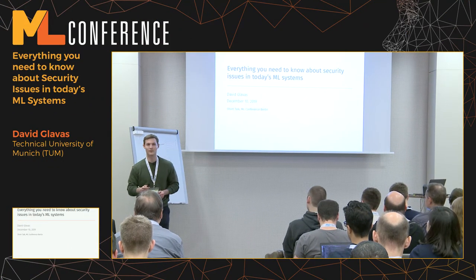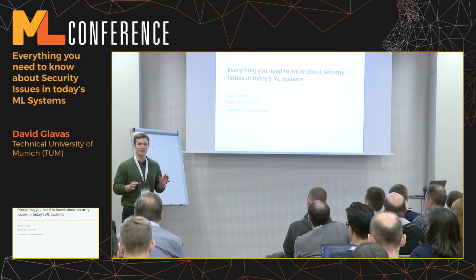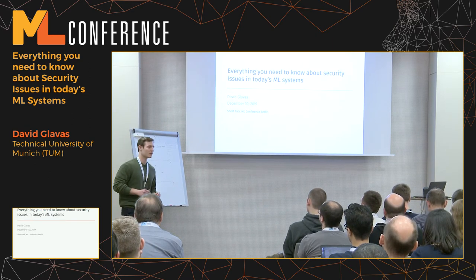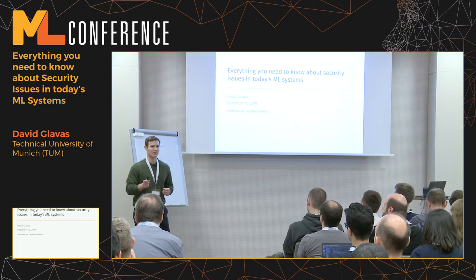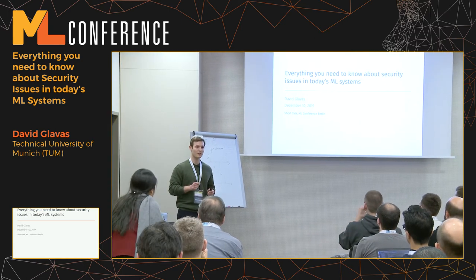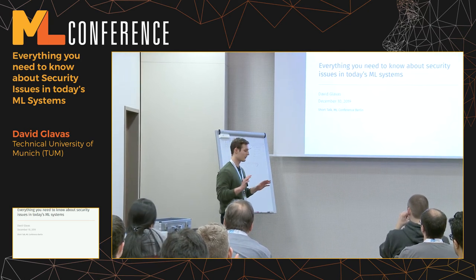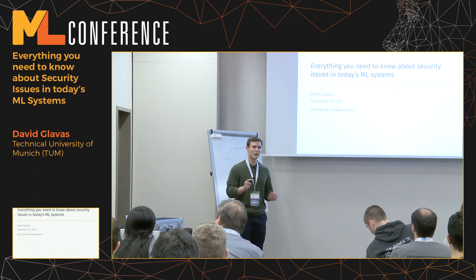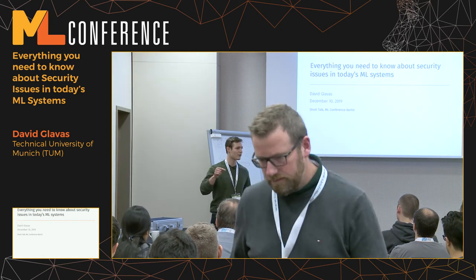My name is David. I studied computer science at the Technical University of Munich, where I collaborated with the IT security chair on topics related to IT security and machine learning. I then worked on a data project at Fraunhofer ISAC in their cognitive security department, which focuses on the intersection of machine learning and computer security — specifically the susceptibility of neural networks to adversarial examples.